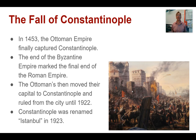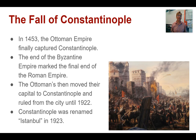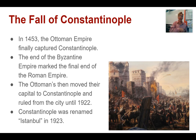Constantinople itself is going to fall. 1453 rolls around, and the Ottoman Empire finally captures this city with the use of super big cannons. They blow huge holes in the wall and are able to take the city. The end of the Byzantine Empire marks the final end of the Roman Empire — because remember, this is the Eastern Roman Empire. They called themselves Romans, and the Romans had been around since 800 BC. But in 1453, there are finally no more Romans.